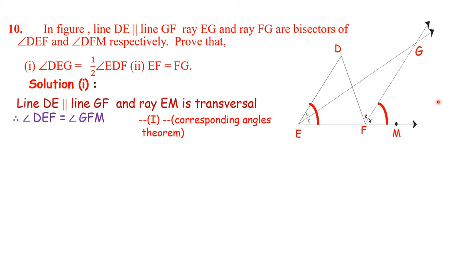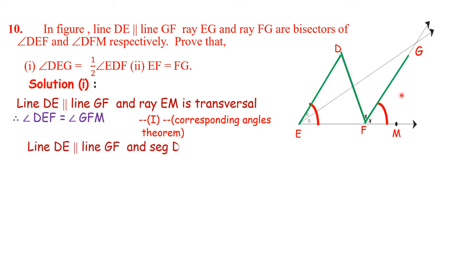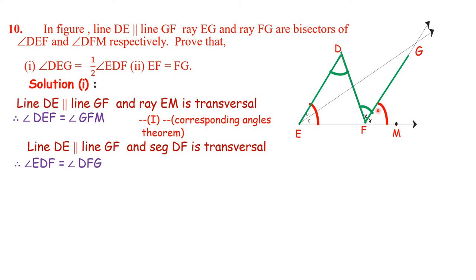Now observe the figure. Line DE is parallel to GF and DF is a transversal. Therefore, these two angles are congruent or equal. So write down: angle EDF is equal to angle DFG. This is statement number 2: alternate angles theorem.